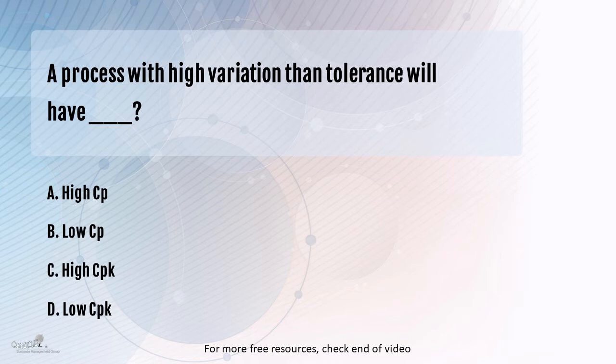In order to answer this question, you need to know the concept of process capability, and within that you need to know what CP and CPK are. The formula for CP — I'm sure you would recollect, and if you don't, my request is to go and refresh your concepts relating to process capability. It talks about a ratio of the variation in the process and that of the allowed variation by the customer.